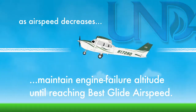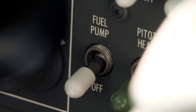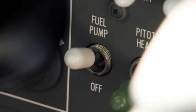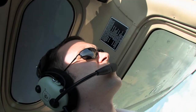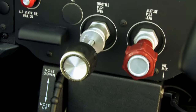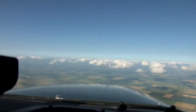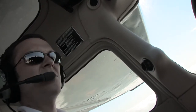As the airplane continues to decelerate, the pilot must run the memorized engine failure flight checklist specific to the Cessna 172. This initial memory procedure is designed as a quick troubleshoot to help the pilot get the engine restarted. If the engine fails to restart, the pilot's thought process must immediately turn to the successful completion of a forced landing.